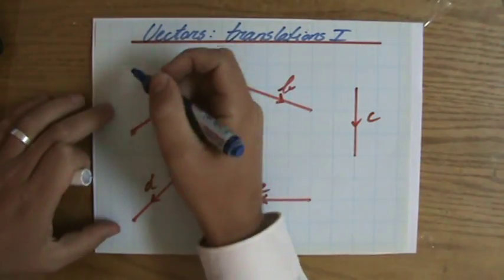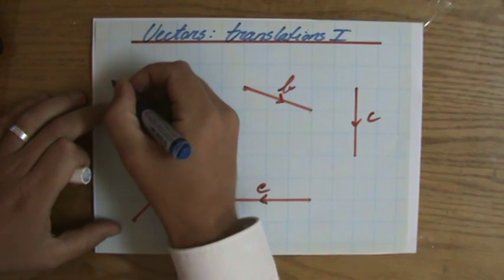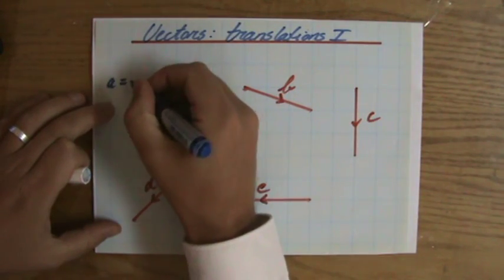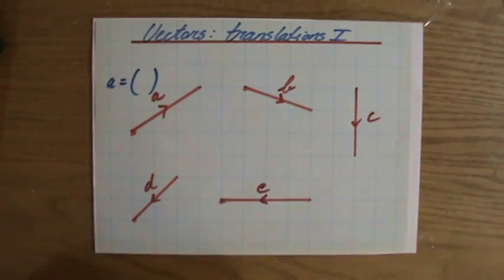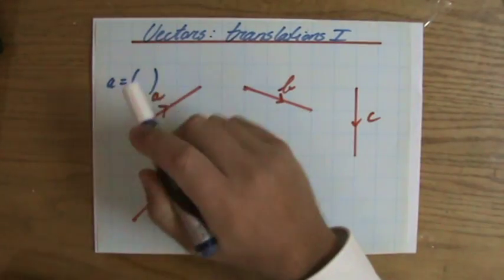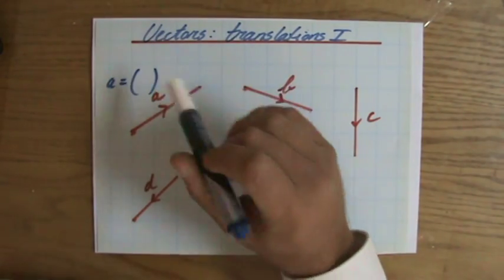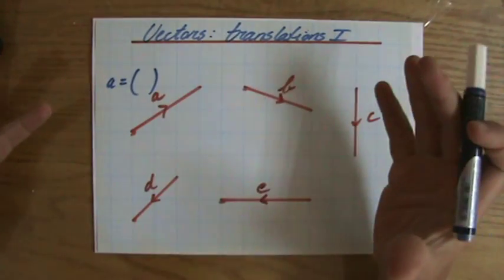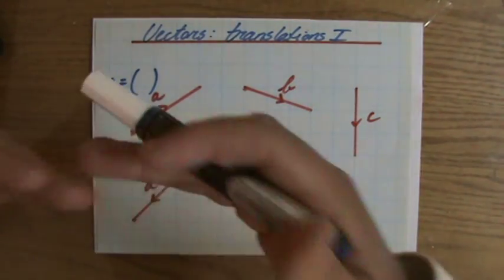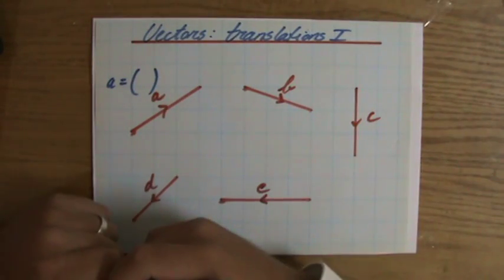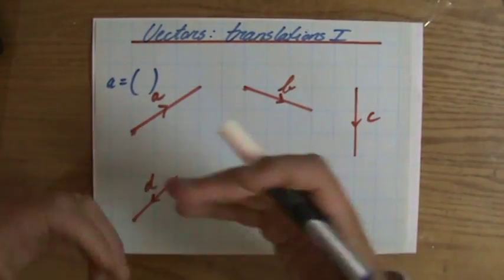In vectors, in my previous video I already showed you, we usually use what we call a single column notation. The top number is going to be your horizontal translation, so how much do you move horizontally. And the bottom number is going to be your vertical translation. So what is your translation vertically?